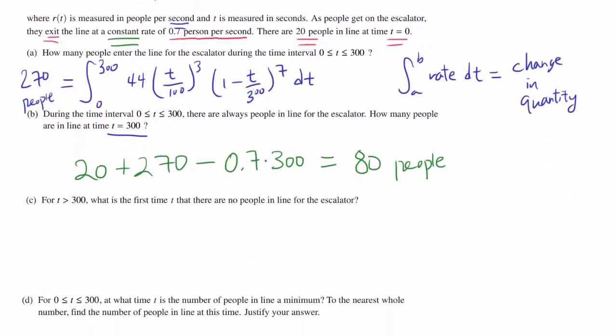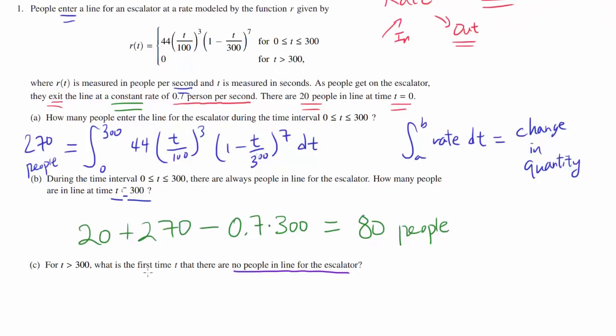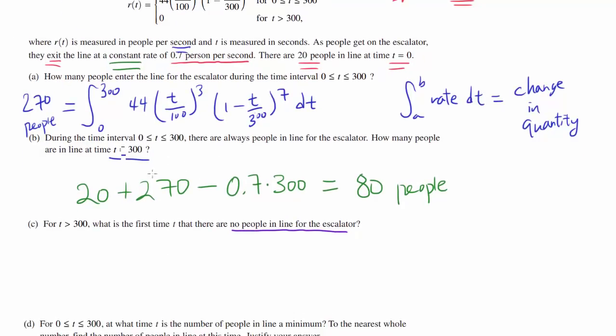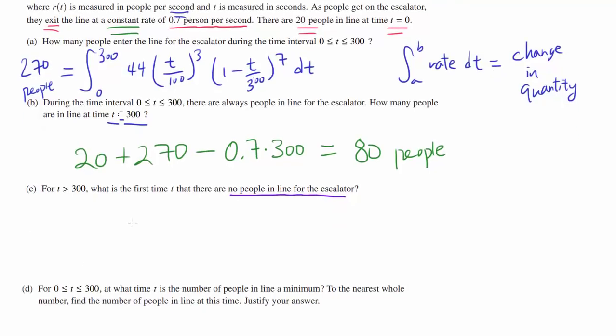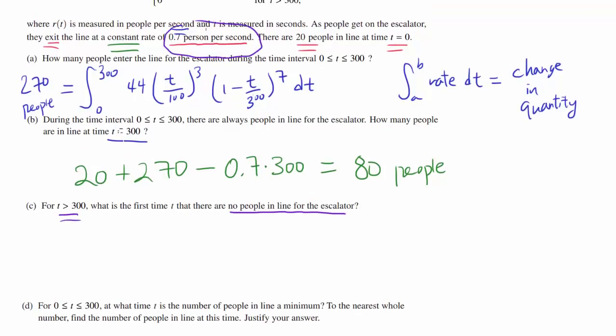For t greater than 300, what is the first time t that there are no people in line for the escalator? So after the 300 second mark, remember that no one is entering the line anymore. They closed it off. Or maybe something exploded in the escalator and it's broken now. So what do we do? Well, after this, no one is entering, but people are still going to be exiting. So we only have to pay attention to 0.7.